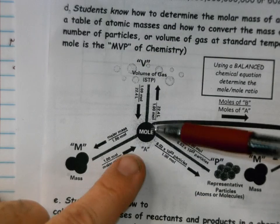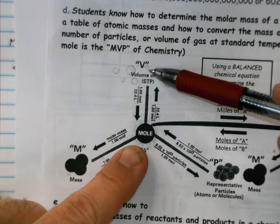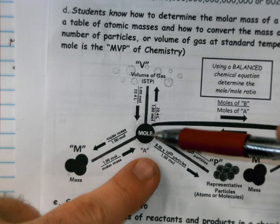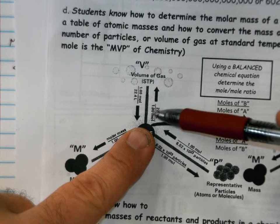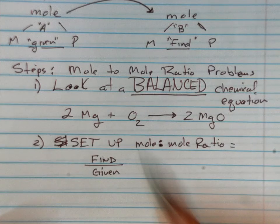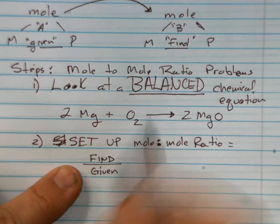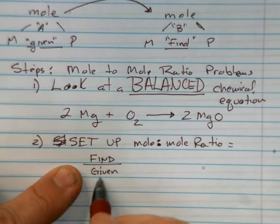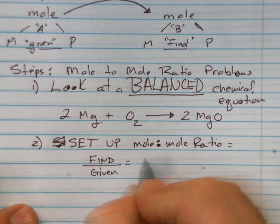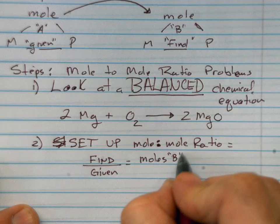When we were learning the MVP triangle, anytime if you're going up to volume, what you're going to is always on the top of this fraction. So we have 22.4 on the top, and since we're coming from the mole, that's on the bottom. The same thing when we're doing mole ratios: what we're trying to find we put on the top, what we're given we put on the bottom.